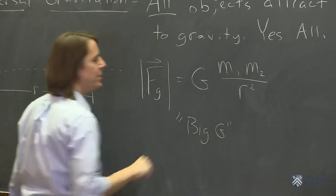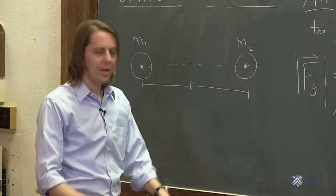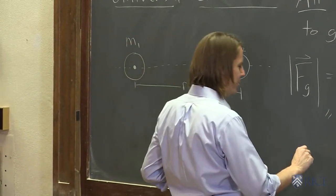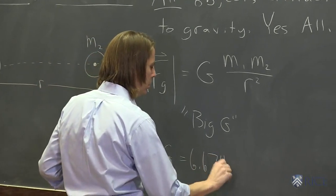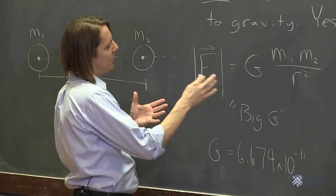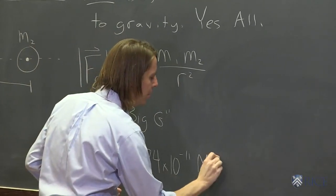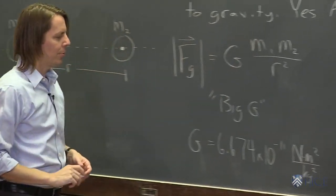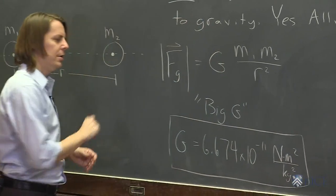We always say big G to distinguish it from little g. Little g is 9.81 meters per second squared — acceleration near the surface of the Earth. Big G is a universal constant; it applies everywhere. It's 6.674 times 10 to the minus 11. The units must come out in newtons, with meters squared on top and kilograms squared on the bottom: newton meters squared per kilogram squared. That's the constant you need to calculate gravitational forces.